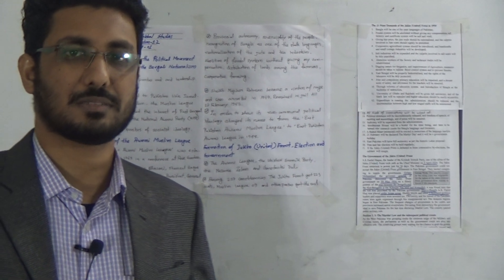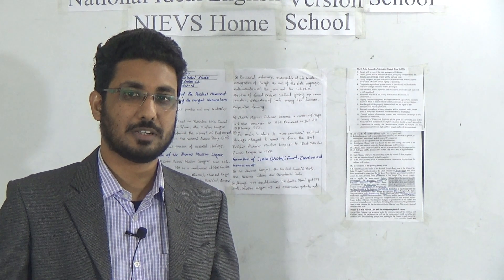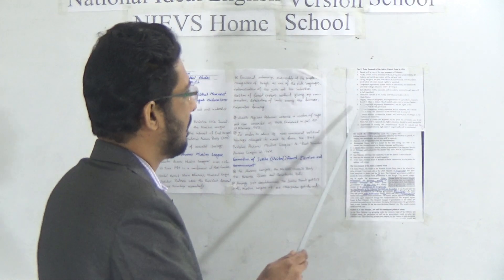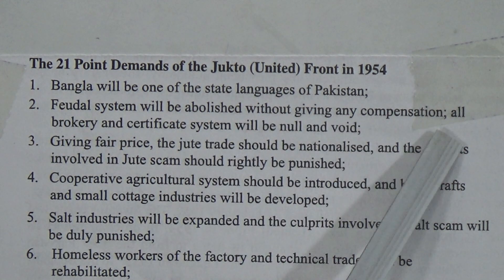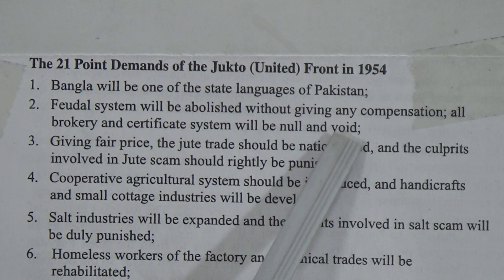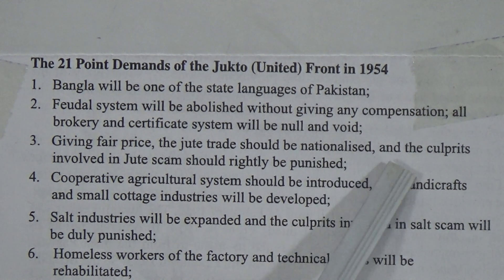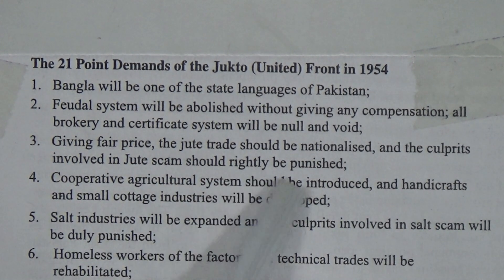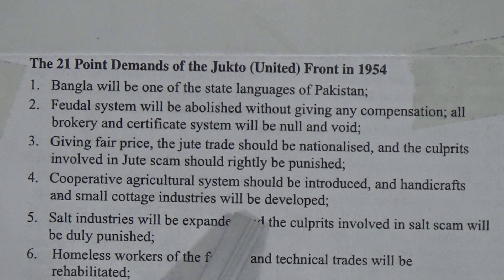Before the election, the Jugto Front presented a manifesto known as the famous 21 Demands. Point 1: Bangla will be one of the state languages of Pakistan. Point 2: The feudal system will be abolished without compensation; all brokery and certificate systems will be null and void — meaning dismissed or cancelled. Point 3: The jute trade should be nationalized and culprits involved in the jute scam should be punished.